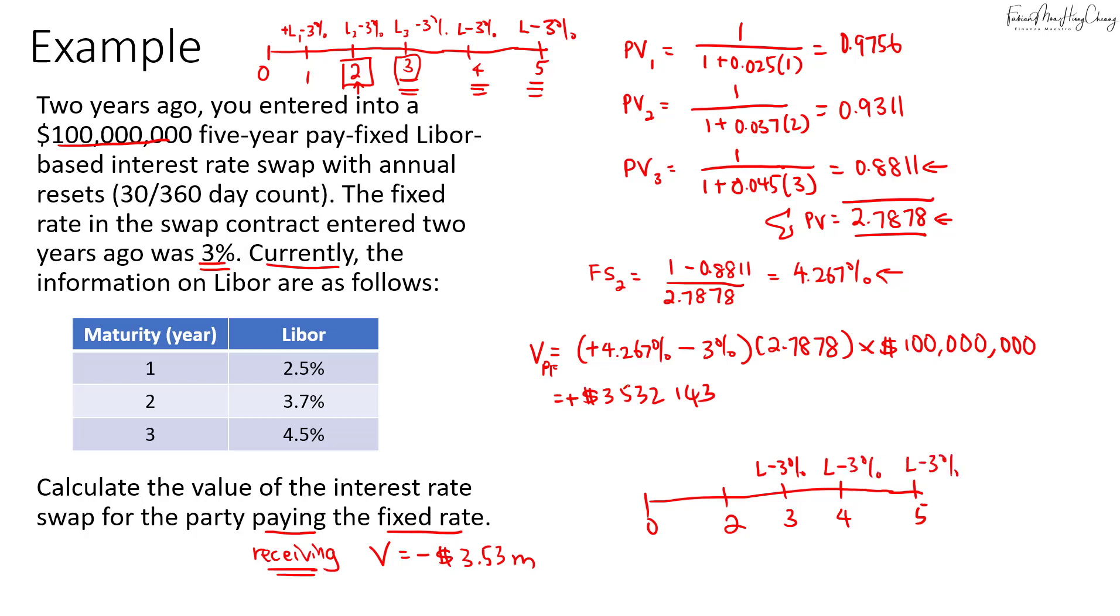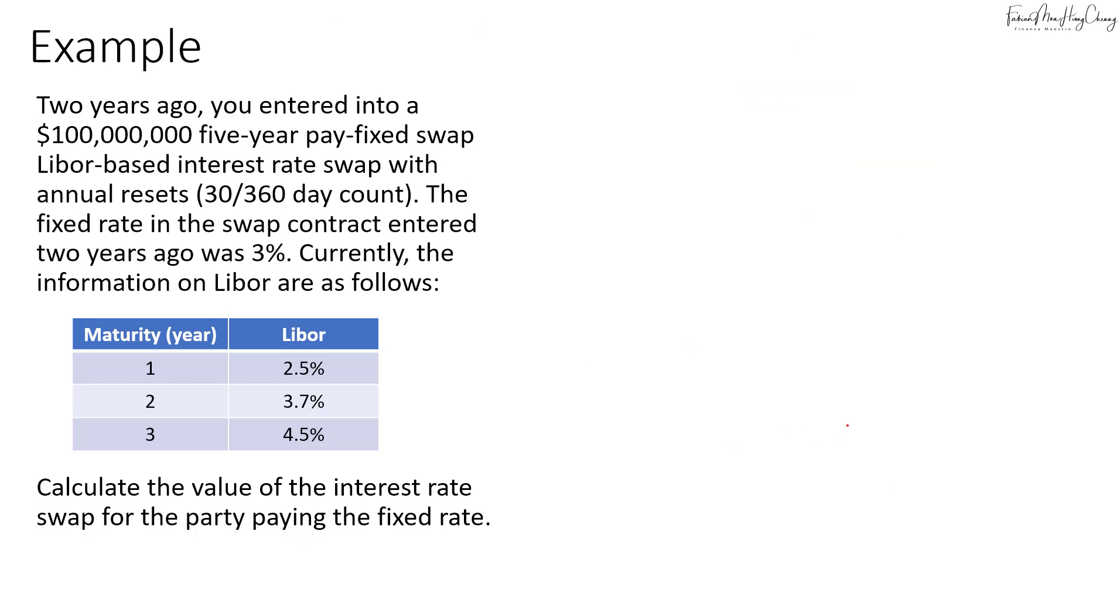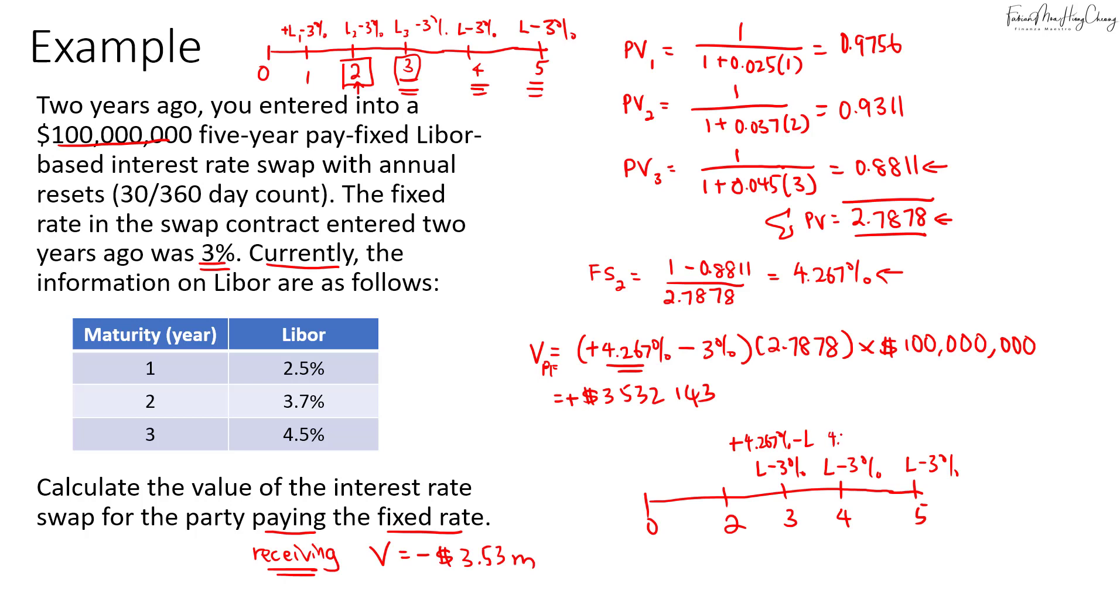But now what we are doing is we are receiving fixed. We assume that if we can receive fixed, so you will receive 4.267% minus LIBOR. And then for the same thing, you receive 4.267% minus LIBOR for year four, and then you receive 4.267% minus LIBOR. So if we were to net off this, you will just have 4.267% minus 3% for these three years.